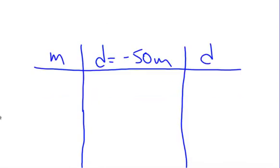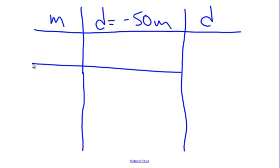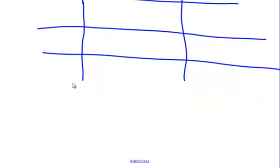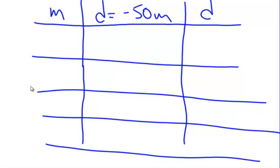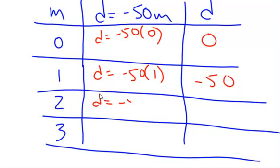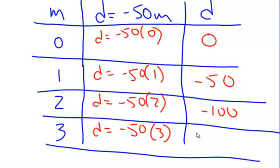I'm going to use easy numbers for my minutes: 0, 1, 2, and 3. Now I'm going to plug in. d equals negative 50 times 0 — anything times 0 is 0. d equals negative 50 times 1, which is negative 50. d equals negative 50 times 2, which is negative 100. d equals negative 50 times 3, which is negative 150.